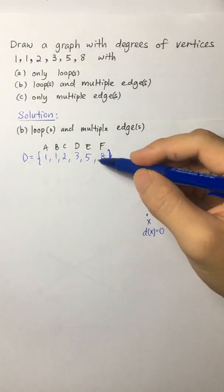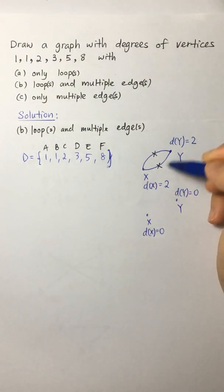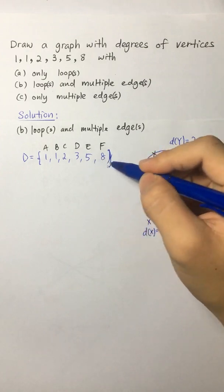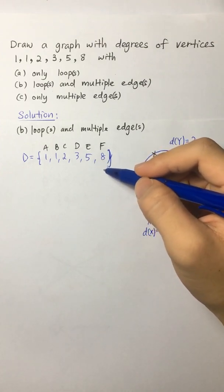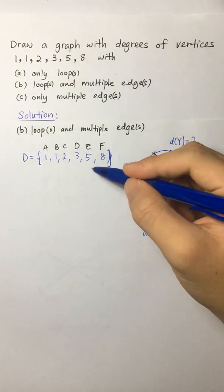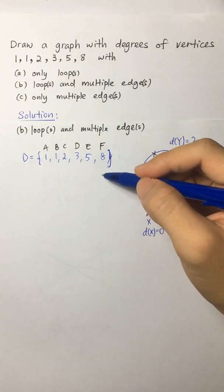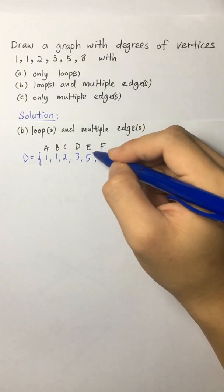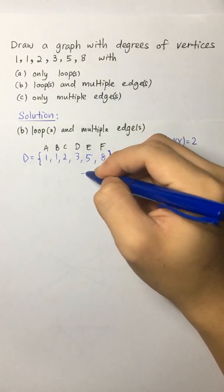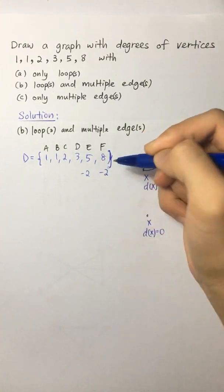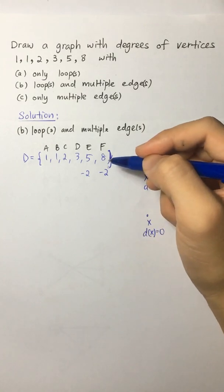So now we use this fact that we have to remove a pair of multiple edges. So when we remove the multiple edges, we have to minus a total of 4 from both of the vertices. So let's say we choose E and F. We have to minus 2 here and minus 2 here. So a total of 4 degrees of vertices.